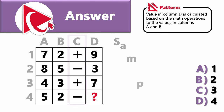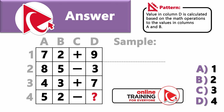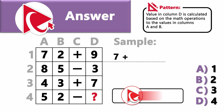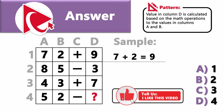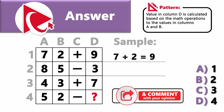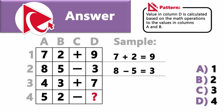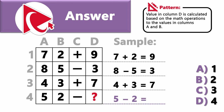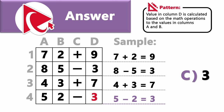To calculate row 1: 7 plus 2 equals 9. Row 2: 8 minus 5 equals 3. Row 3: 4 plus 3 equals 7. For the missing value: 5 minus 2 equals 3. So the correct answer here is choice C, 3.